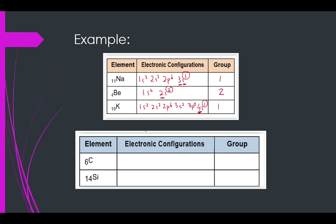What about carbon? Carbon has 6 protons, so 6 electrons: 1s2, 2s2, 2p2. That is 2 plus 2 plus 2 equals 6. The valence shell is n=2, with 2 electrons in 2s and 2 electrons in 2p. Since this is P block, you add the valence shell electrons plus 10: 2 plus 2 plus 10 equals 14. So carbon is in group 14.